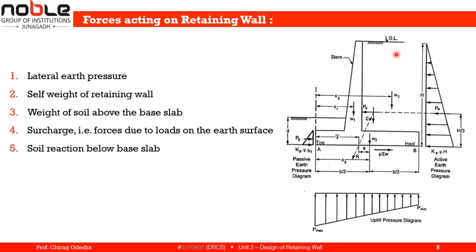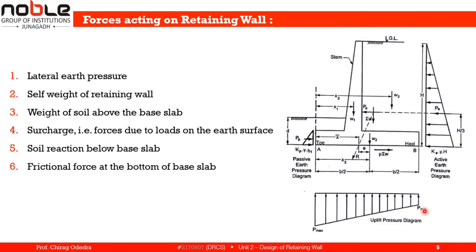The fifth force is soil reaction below the base slab — the uplift pressure of soil. Due to all the applied forces, maximum soil reaction occurs on the toe side and minimum soil reaction occurs on the heel side. The sixth force is the frictional force at the bottom of the base slab, which develops between the base slab and the soil beneath the retaining wall.